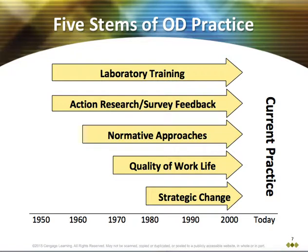The normative belief stage was marked by two key programs: Likert's participative management program, which characterized organizations as having one of four types of management systems, and Blake and Morton's grid, which stated that an individual's managerial style can be described according to his or her concern for production or concern for people.